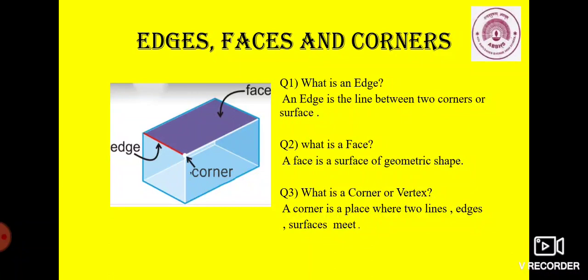What is a corner or vertex, children? A corner is a place where two lines, edges, and surfaces meet. To understand this, now we will take the example of geometric shapes.